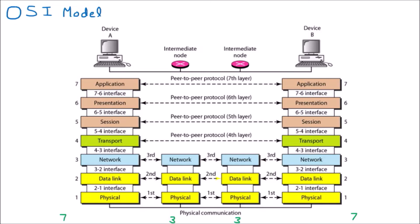First of all, we are going to take the example of one computer. The user is here on the top, interacting with that system, and the wire is coming here. In between, the OSI layers start working — the whole conversion from the user side happens. The user side has graphics, images, and protocols, and that is converted to wire, meaning bits going as 1s and 0s like 110011. That is done by the OSI model, which has seven layers.